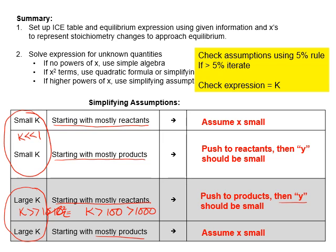Remember that at the end, you need to check any assumptions you've made using the 5% rule. Even if the 5% rule is not completely met, you can still use this method by iterating. Finally, it's always a good idea to plug your final answers back into your equilibrium expression just to make sure you haven't made any algebra mistakes.